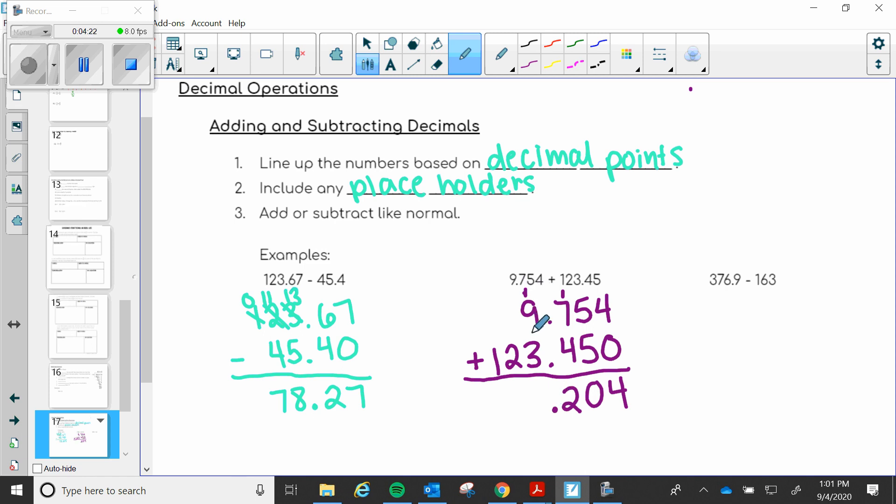One plus nine is ten. Ten plus three is thirteen. You bring your three down. Put your one up here. One plus two is three. And then we have nothing to add so we just bring that one down. So my final answer for this problem would be 133.204.